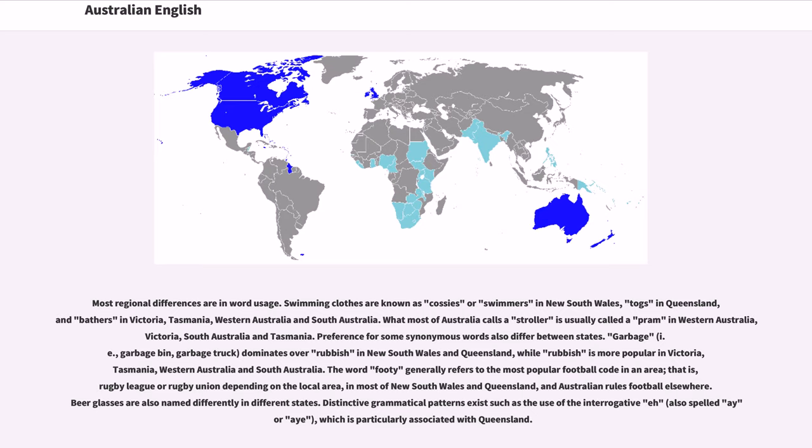The word footy generally refers to the most popular football code in an area, that is, rugby league or rugby union depending on the local area, in most of New South Wales and Queensland, and Australian rules football elsewhere. Beer glasses are also named differently in different states.